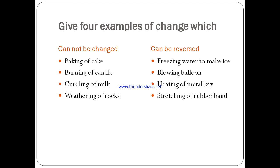Give four examples of changes which cannot be reversed. Baking of a cake, burning of coal, curdling of milk, weathering of rocks. These changes cannot be reversed.